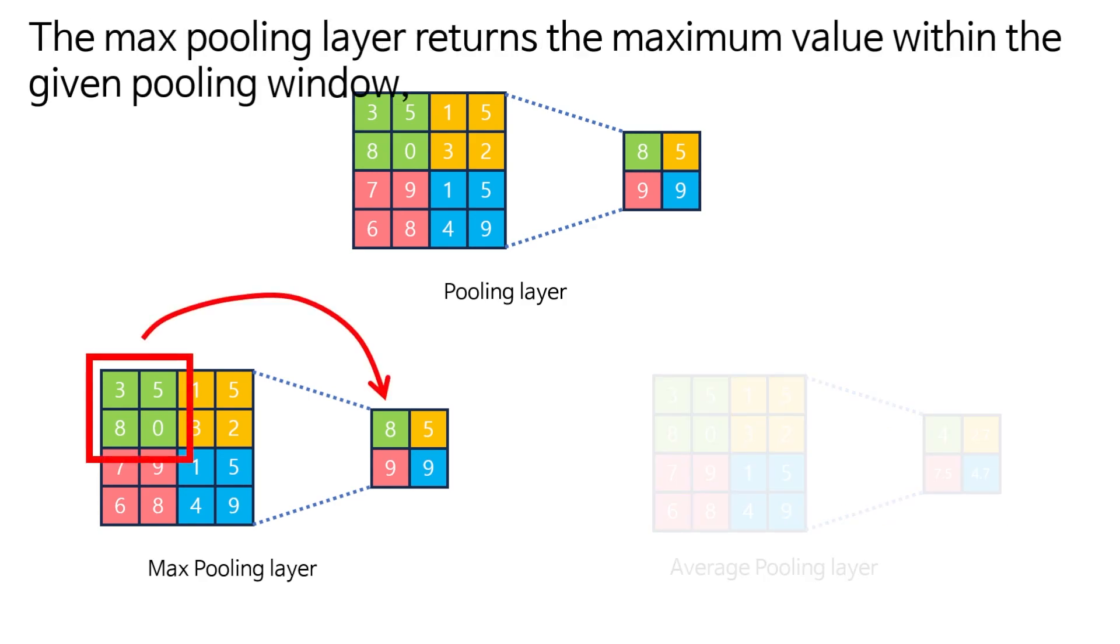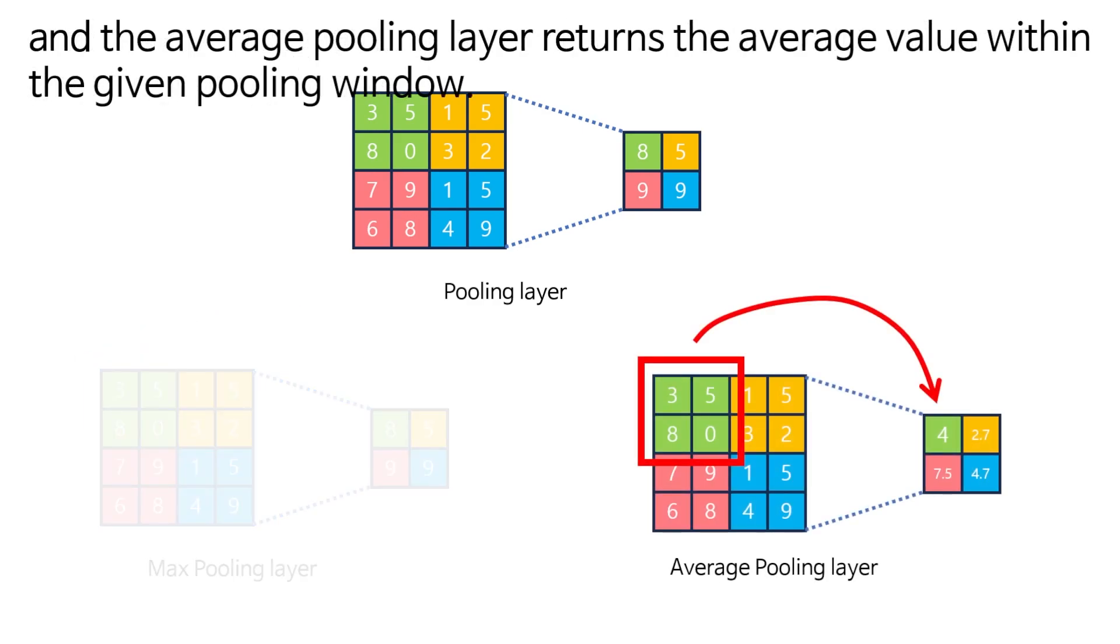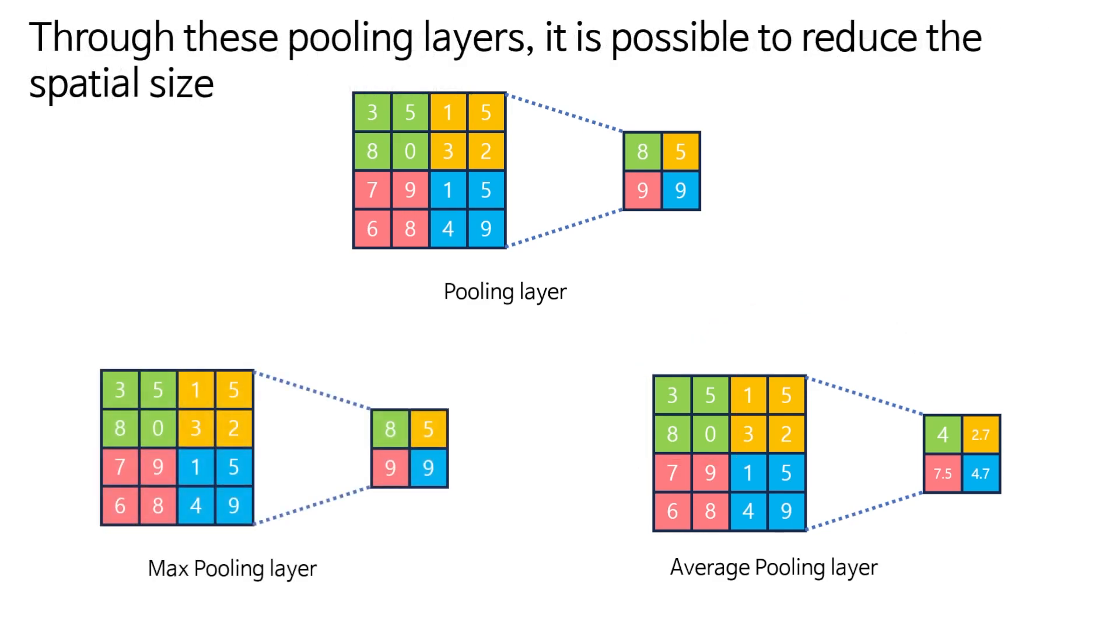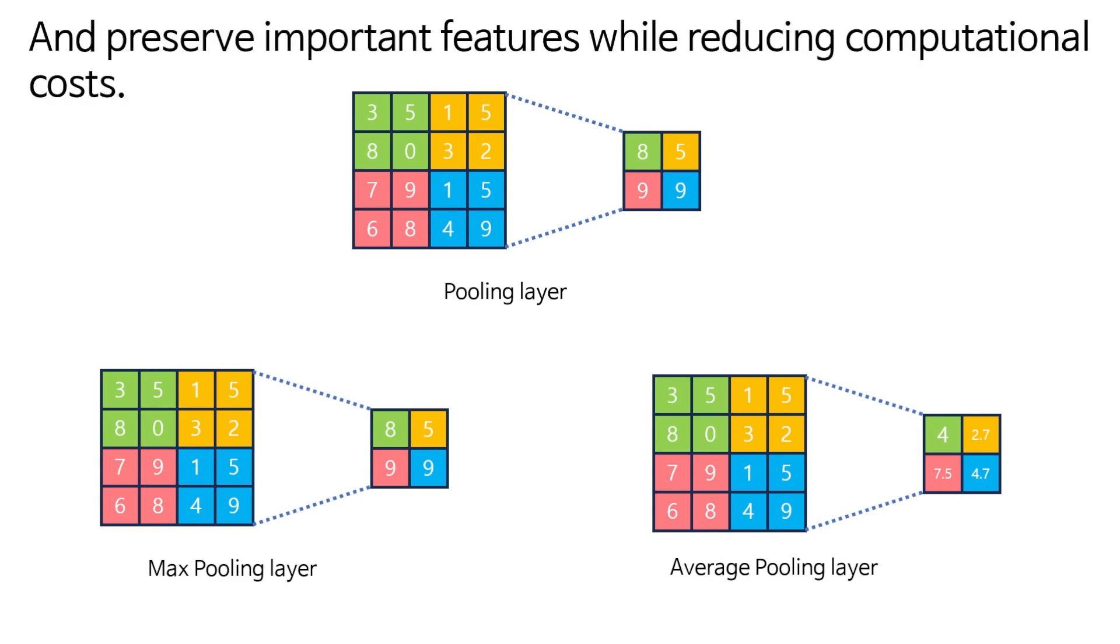The max pooling layer returns the maximum value within the given pooling window. Through these pooling layers, it is possible to reduce the spatial size and preserve important features while reducing computational costs.